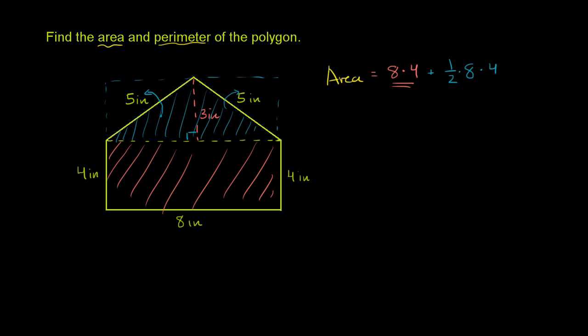And so let's just calculate it. This gives us 32 plus, oh sorry, it's not 8 times 4. I don't want to confuse you. The triangle's height is 3. 8 times 3. Right there. That's the triangle's height.